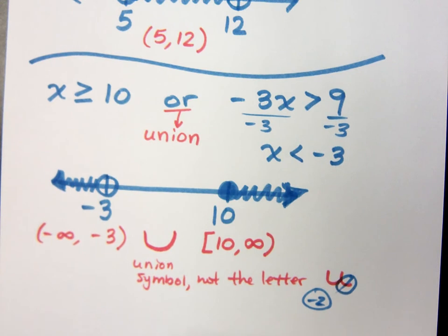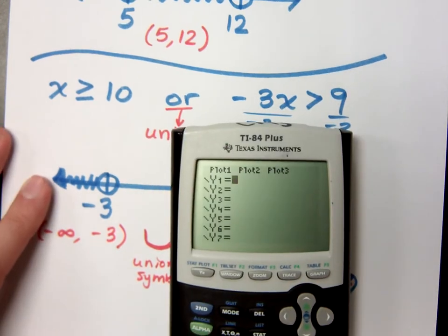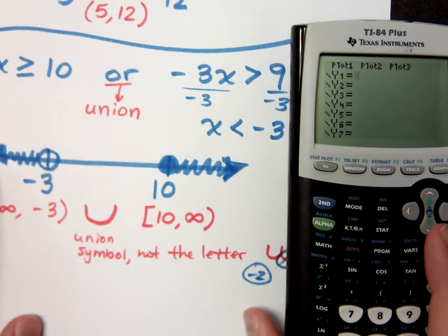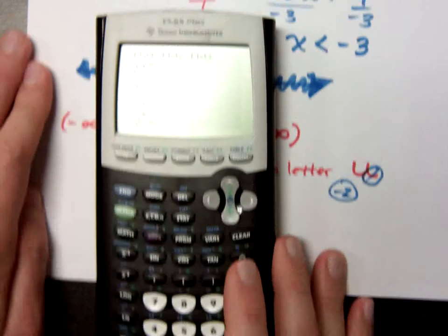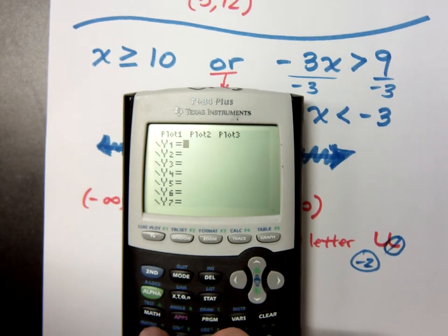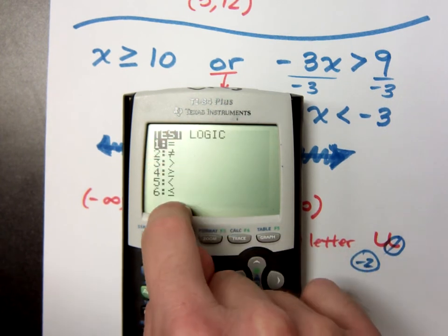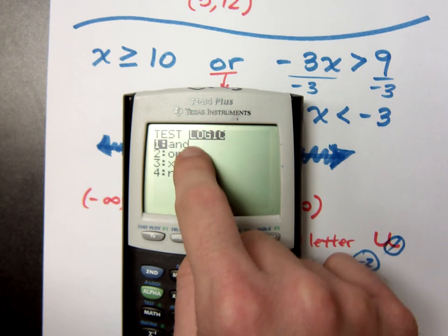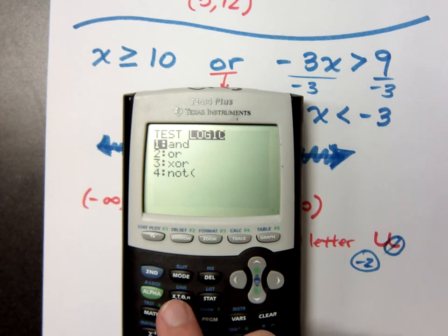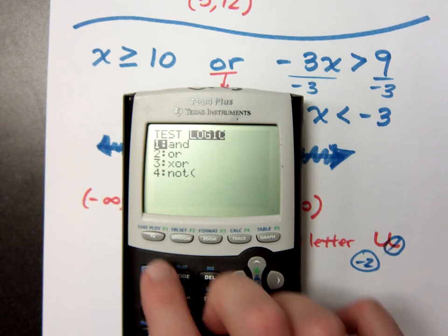Now, you can actually graph these guys on your graphing calculator. Now, to do that, you have to make sure you know how to use the logic part of your calculator. If you go to second test, you have inequalities, and under logic, you have and and or. Now, here's the thing about logic. Logic will return 0 if it's false, and 1 if it's true.